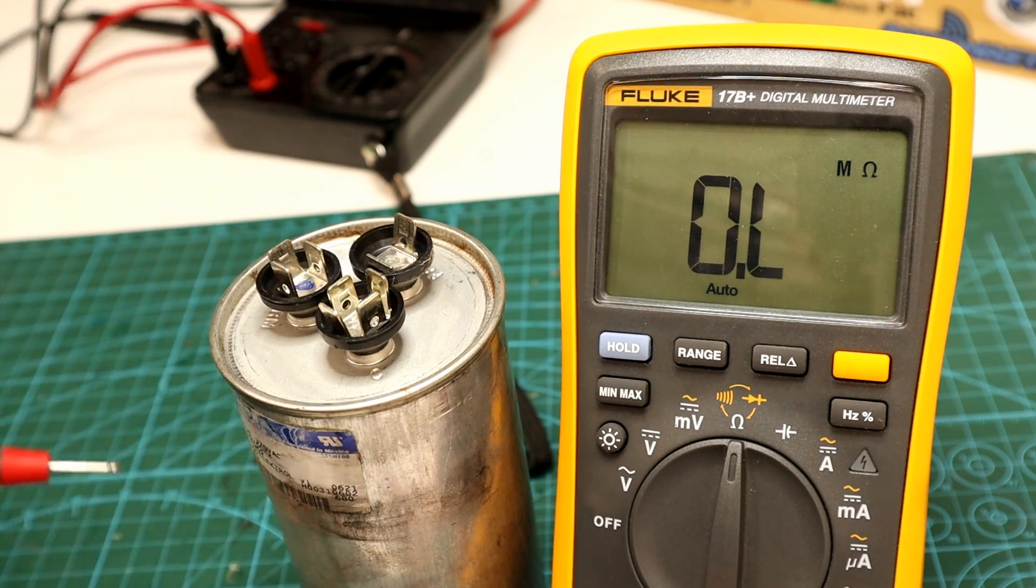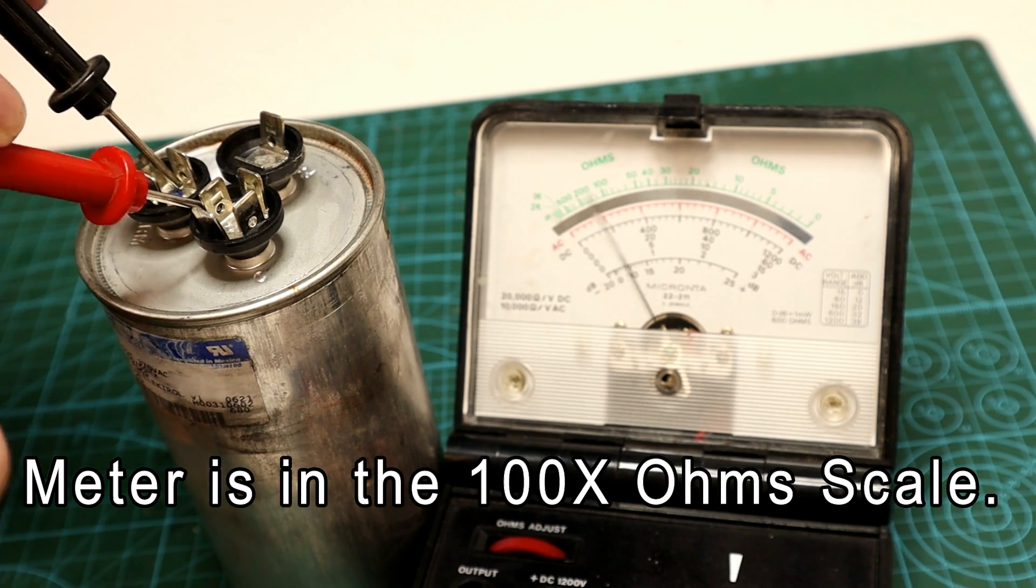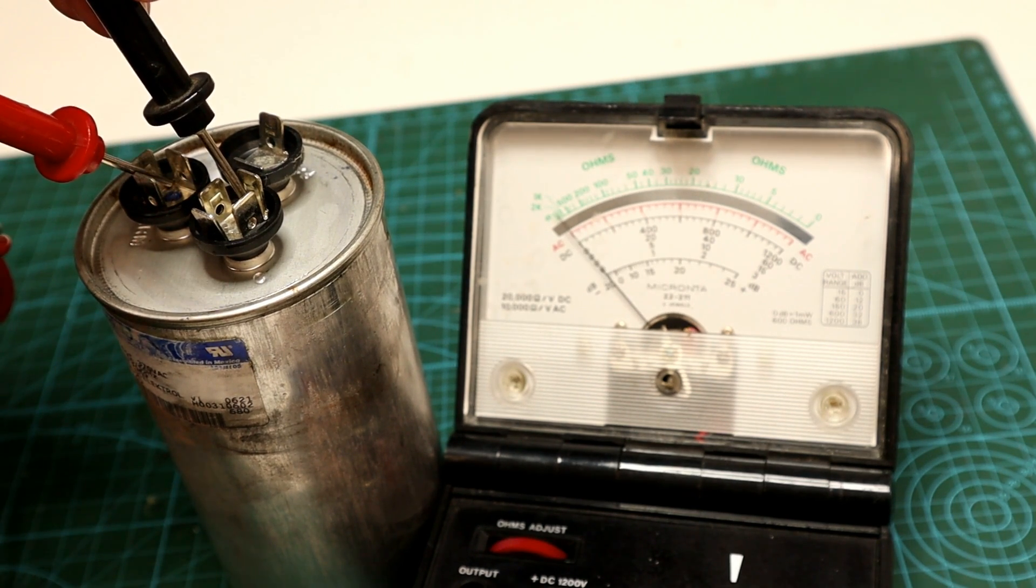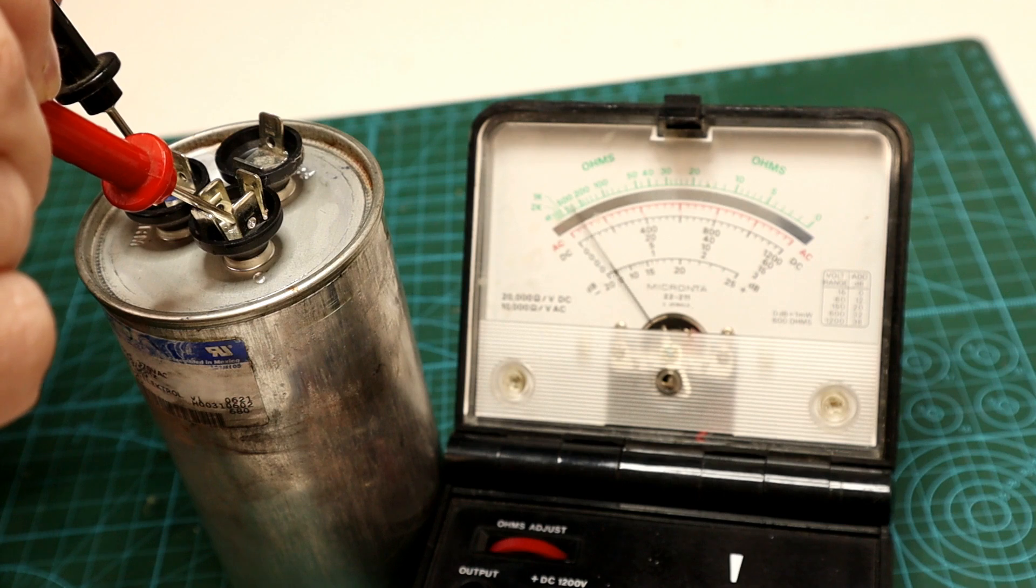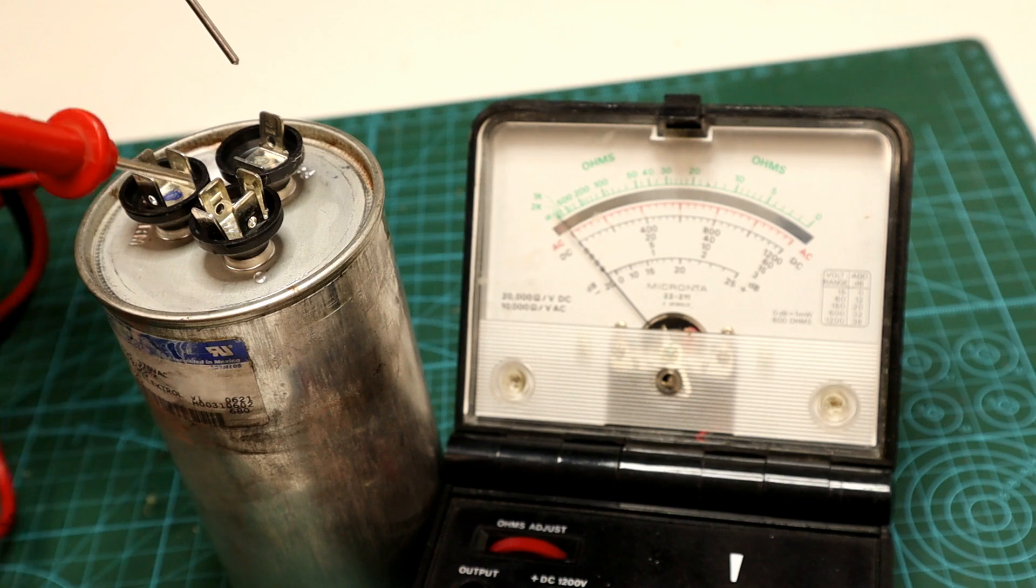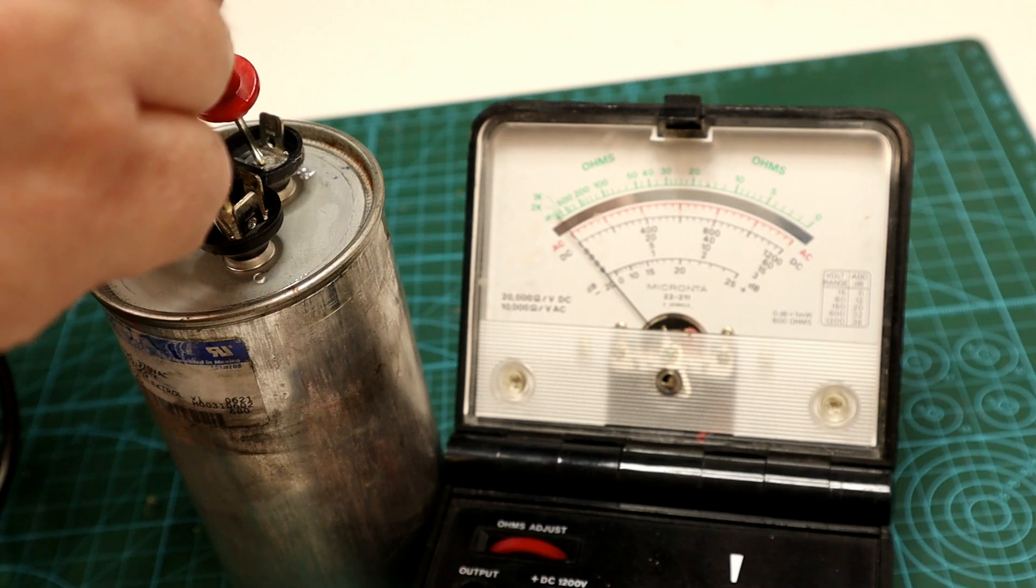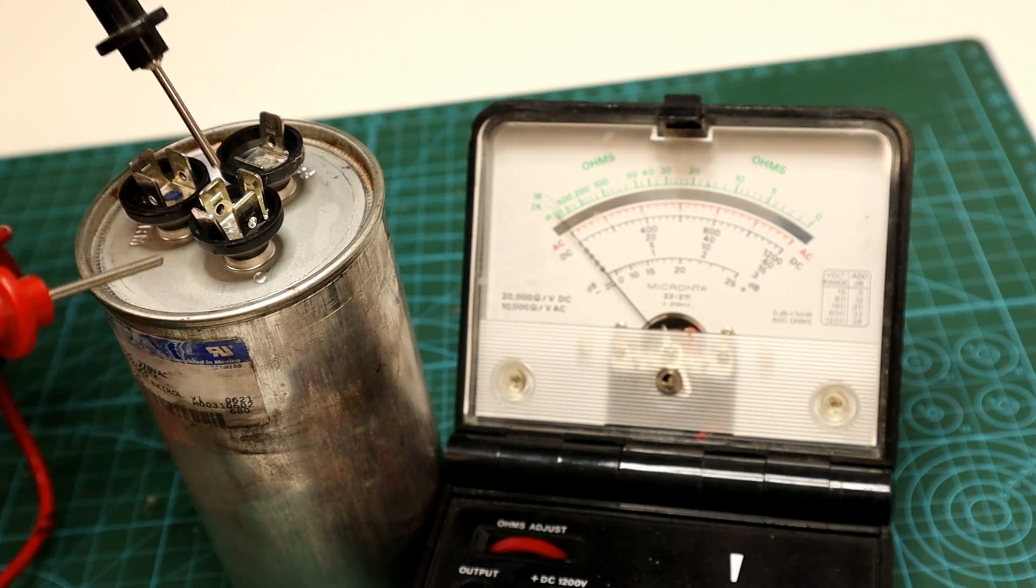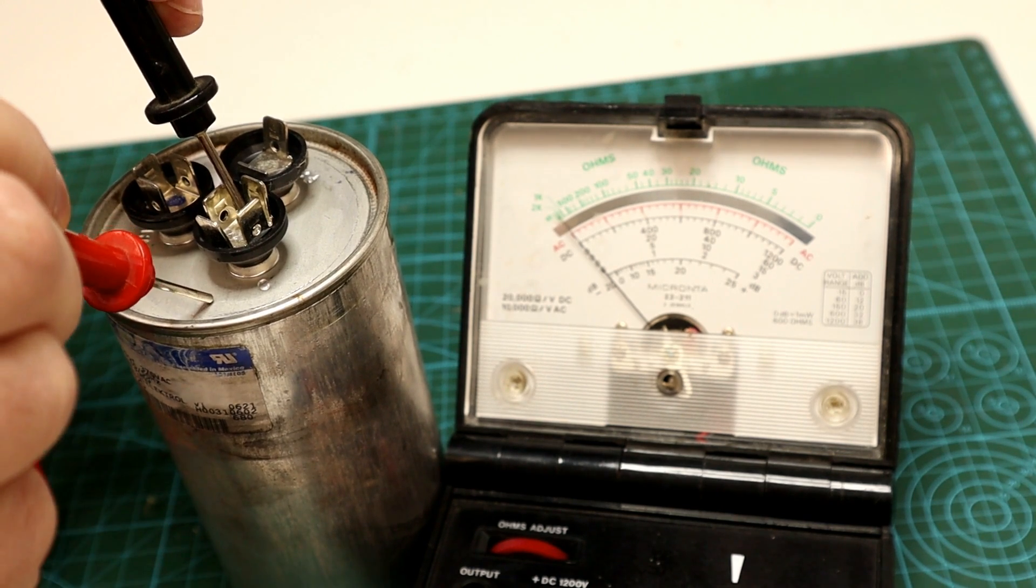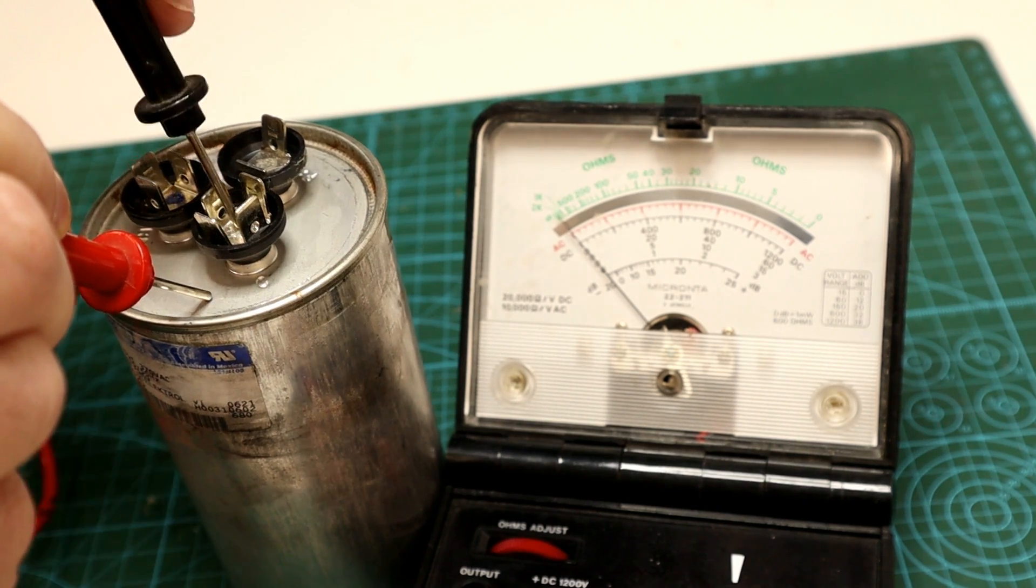Now you can also do this with an analog meter. Same idea. So here's the common and the Herm terminal. See it jump, and then it slowly goes down to infinite resistance again. But if we do it on the fan, common to fan, common to fan nothing. Oh, and another test I should have pointed out with the digital one. You can also check if there's a short between any of these in the case. So you just probe all these, and you should be getting infinite resistance.